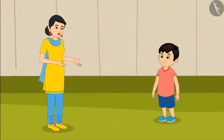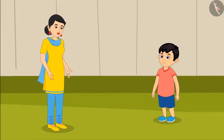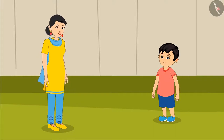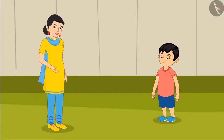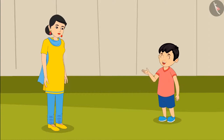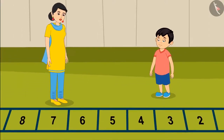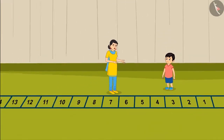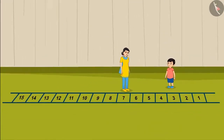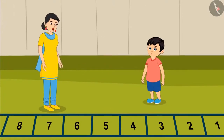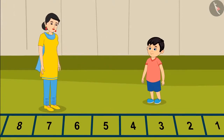Jhotu, just like you were jumping forward and backwards in your class, do you know it can be done with numbers too. Look at these stairs that I have drawn. On these stairs, I have written numbers from 1 to 15. Will you go and stand on number 4, Jhotu? Okay, mom.